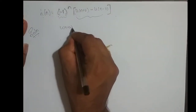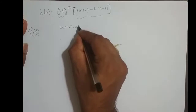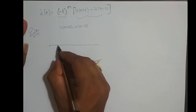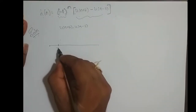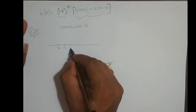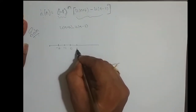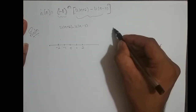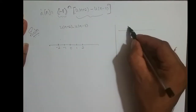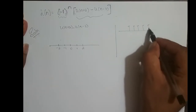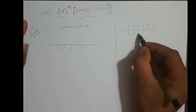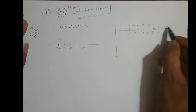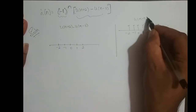What is u(n+2) minus u(n-3)? It starts from minus 2, minus 1, 0, 1, 2. u(n+2) is u(n) shifted left 2 times. So it starts from minus 2, minus 1, 0, 1, 2, 3, 4 and goes on. This is u(n+2).